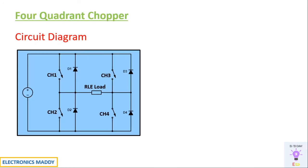This is the circuit diagram of a 4 quadrant chopper. The name itself gives you a clear indication that it should be operating in 4 quadrants of the voltage and current axis. Basically we are considering an RLE load. We will be explaining this circuit by considering only 4 cases, and each of them will clearly give you an understanding of which quadrant it is actually operating in. There is a convention that we need to follow: if the current is flowing through the load in a particular direction and the voltage polarity across the load is plus and minus in a particular fashion, then the voltage is positive and the current is also positive.